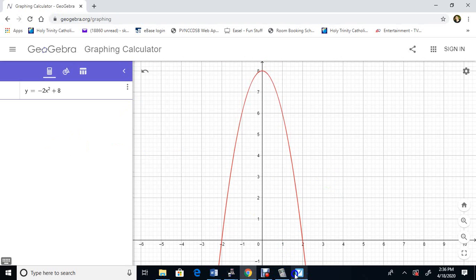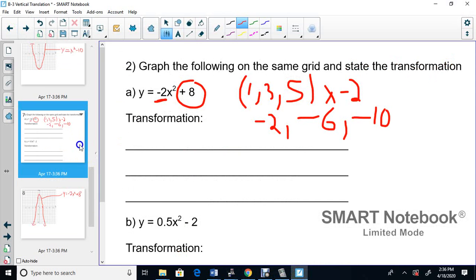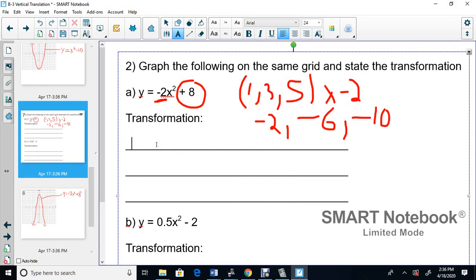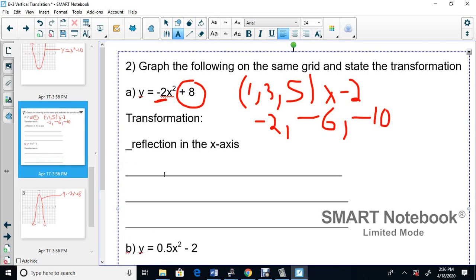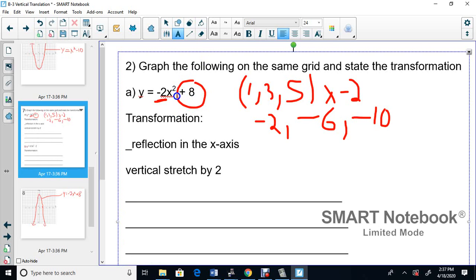Now we're going to have to type the transformations. There are actually three transformations here. I have lines. Let's see if I can start a new. I'll just type on top of you here. So the first one, that negative, the negative here tells me it's a reflection in the x-axis. The next one here, that 2, it's not a decimal or a fraction, it's a vertical stretch by 2.